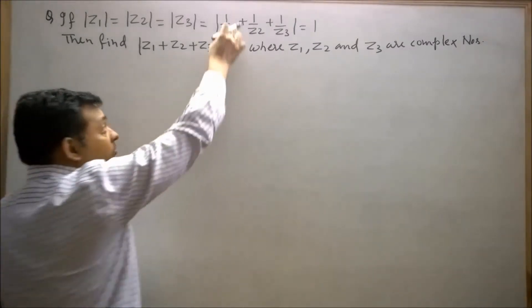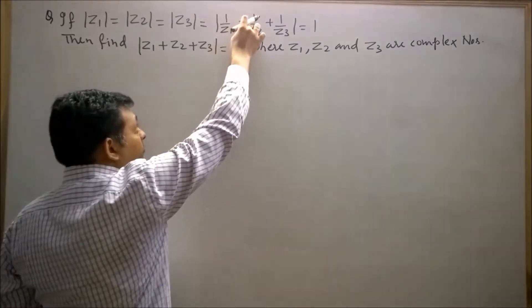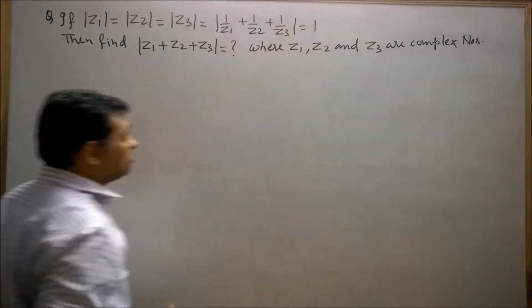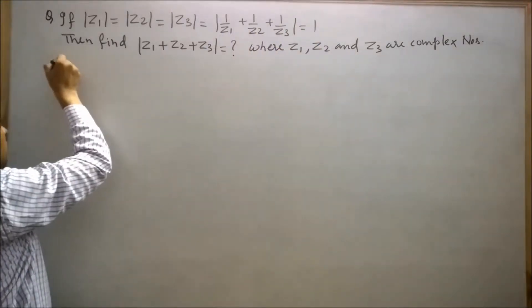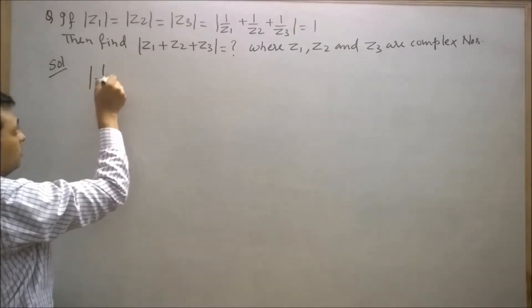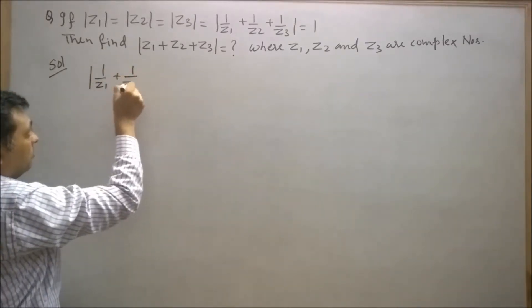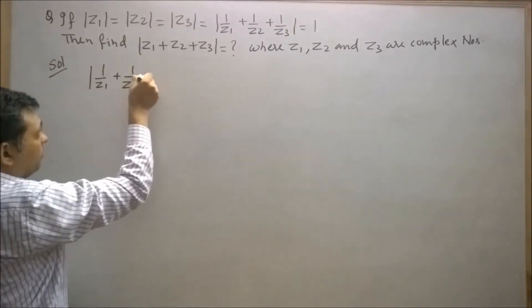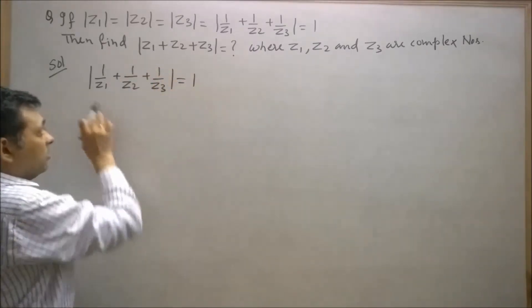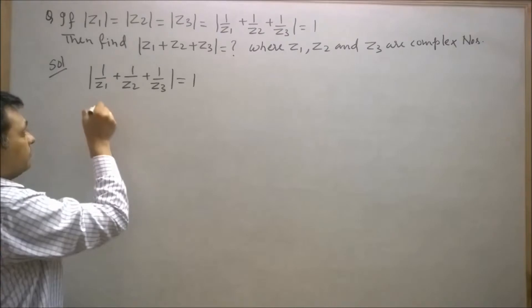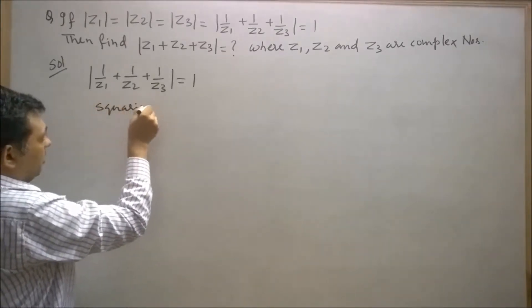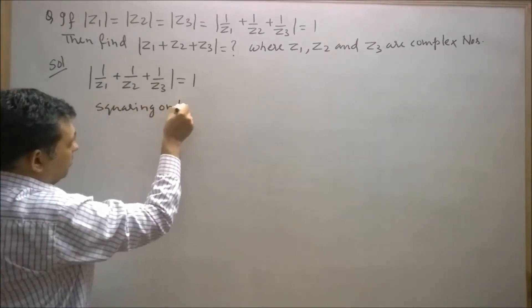It is given that modulus of (1/z1 + 1/z2 + 1/z3) equals 1. Squaring on both sides, the square of the left-hand side will be written accordingly.